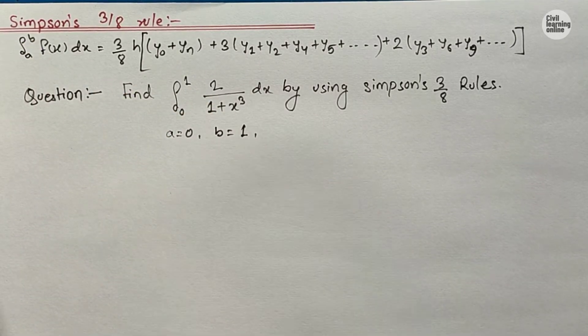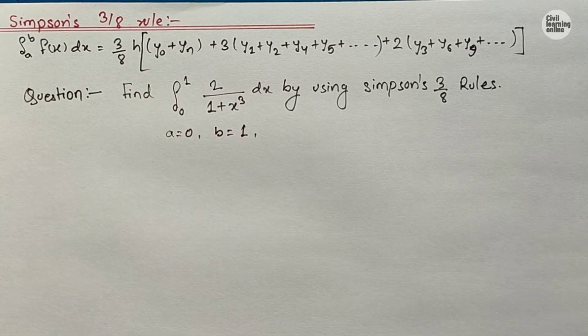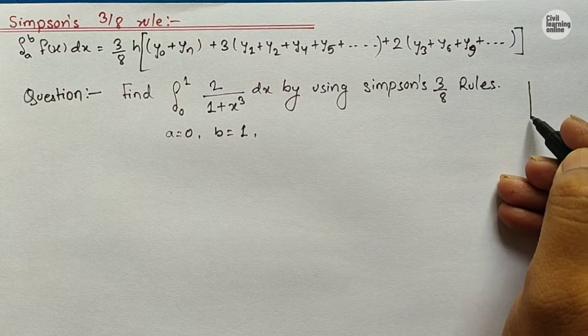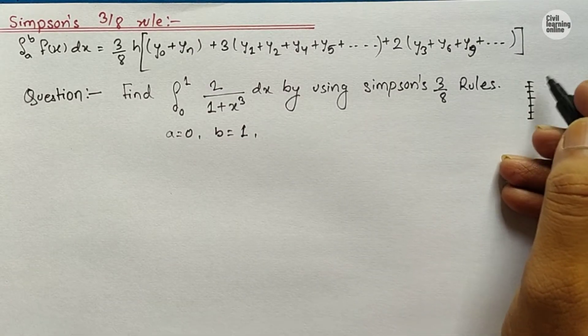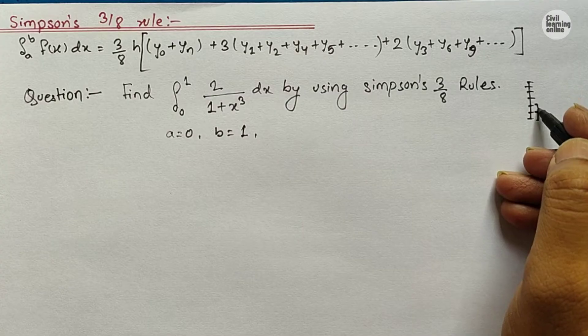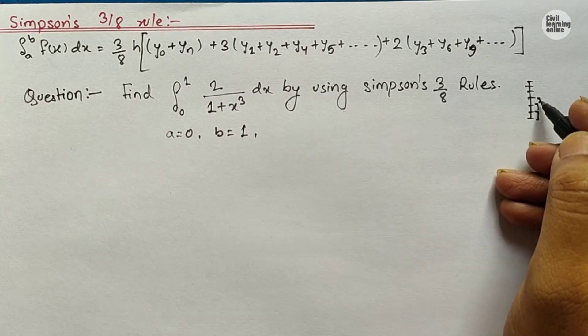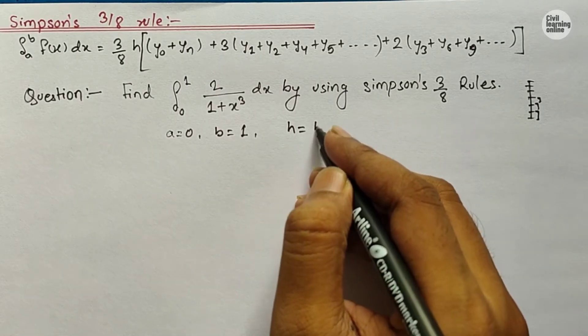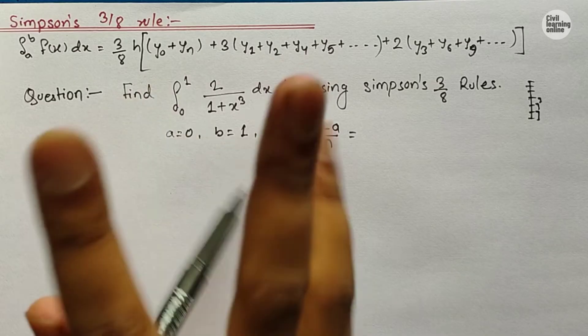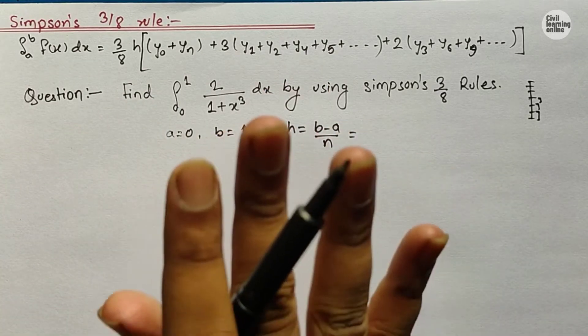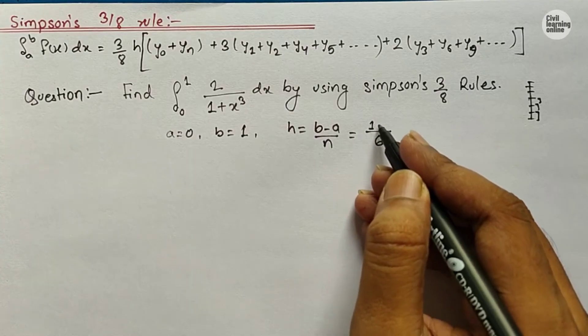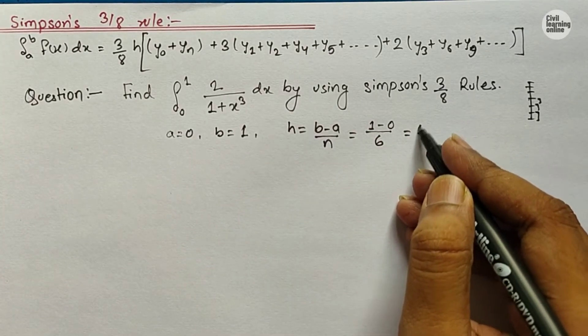And we have one more formula: how to calculate h. h is actually the height of interval and n is the number of intervals. Suppose if we consider a line and divide this line into n equal parts, that is the number of intervals. n is number of intervals means number of equal parts, and h is the length of each part or height of each part. This spacing is called h. So we can calculate the value of h: h equals (b-a)/n. Suppose we are assuming that from 0 to 1 there are 6 equal parts. We will have n equals 6, and b is 1 minus 0. From here we will have h equals 1/6.